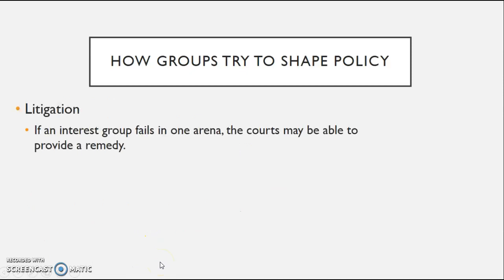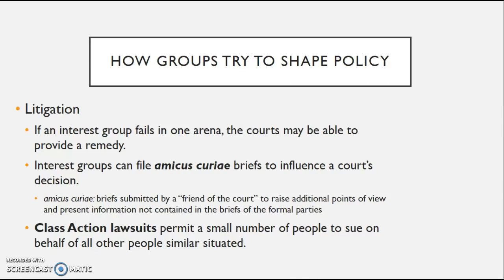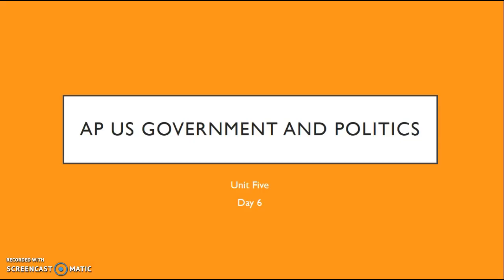With litigation, if an interest group fails in one arena, they will look to going to the courts. That tends to be their last way of trying to influence policy, especially through class action lawsuits. They will also raise additional viewpoints through amicus curiae briefs.